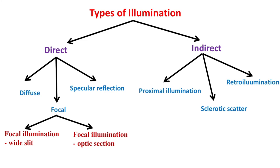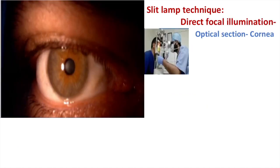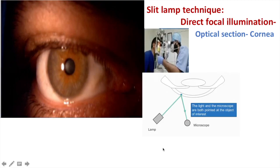Today, direct focal illumination can be of wide slit — also known as para-papilloid — or optical section, which is like a slit. I'll give you a snippet regarding the optical section of the cornea. Direct illumination means the slit lamp illumination and the microscope are both focused at the same point of interest. Optical section means it is like a slit.